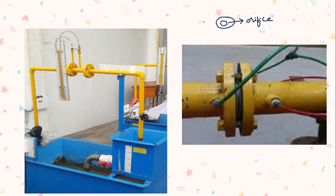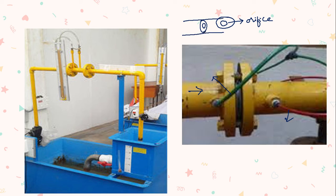Imagine the orifice plate in a vertical orientation — this is how it looks. We fit this orifice meter in between a pipeline to calculate the discharge. The two sections of the orifice meter are connected to the two ends of the manometer to determine the pressure of the fluid flowing through it. One section is connected just before the entrance of the orifice, and the second is connected just after the fluid passes through the inner orifice.